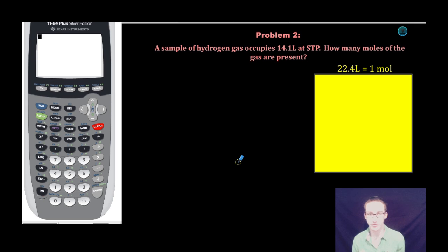Hey everybody, we're back for problem number two. It says a sample of hydrogen gas occupies 14.1 liters at STP. How many moles of the gas are present?